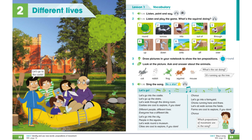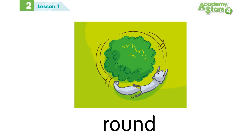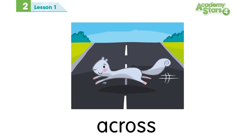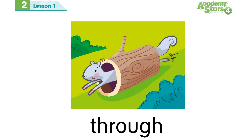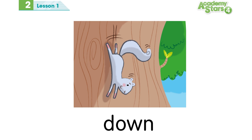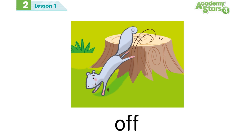Track 1.14. Unit 2, Lesson 1, Activity 1. Round. Across. Into. Out of. Through. Up. Down. Onto. Off. Over.